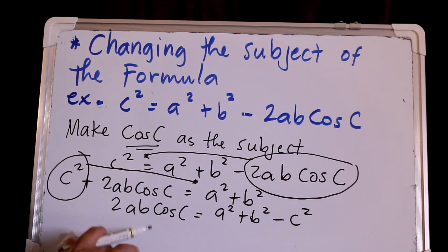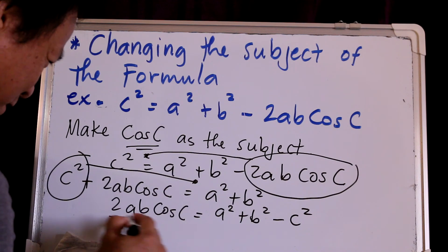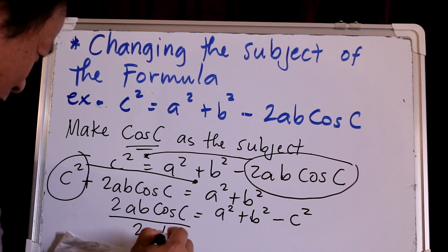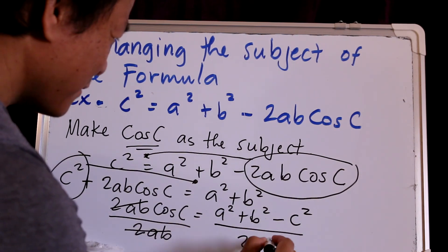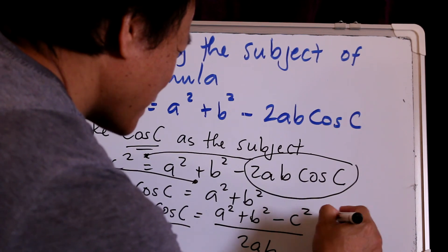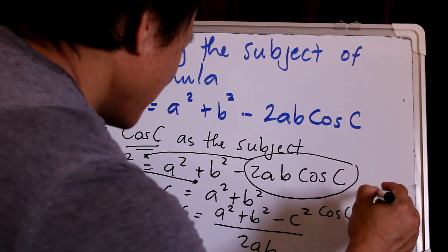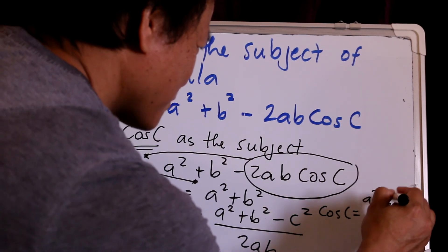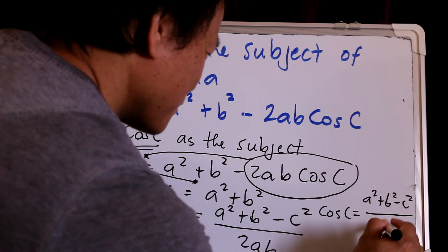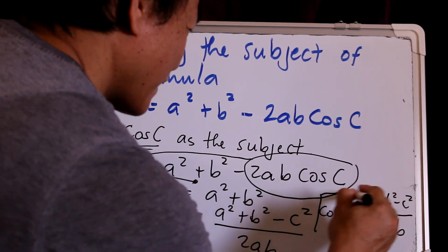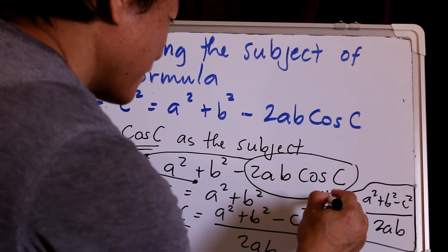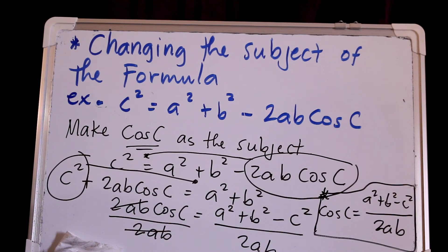Since 2AB is being multiplied, we divide all of it by 2AB. Our answer is cosine C equals A squared plus B squared minus C squared, all over 2AB. This is our final answer.